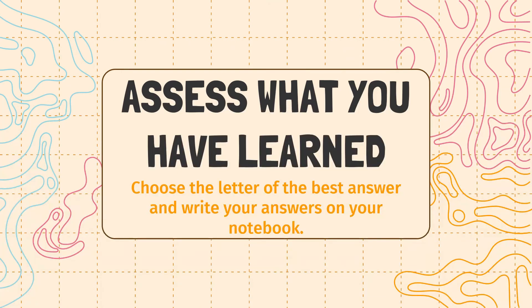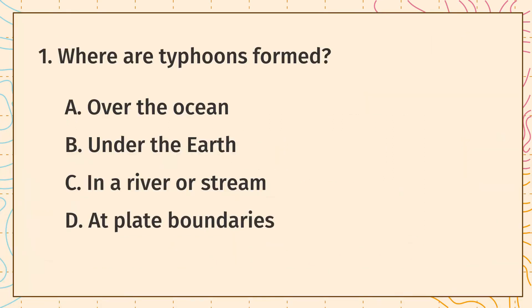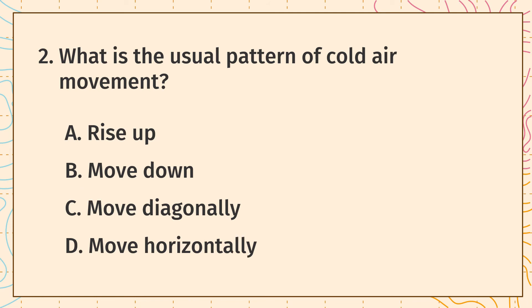Assess what you have learned by answering this 5-item quiz. Choose the letter of the best answer and write your answers on your notebook. Let us start. Question 1: Where are typhoons formed? A. Over the ocean. B. Under the earth. C. In a river or stream. D. At plate boundaries. Question 2: What is the usual pattern of cold air movement? A. Rise up. B. Move down. C. Move diagonally. D. Move horizontally.